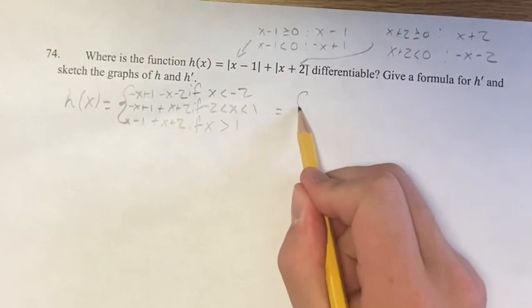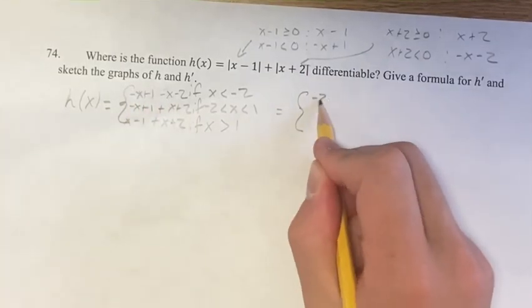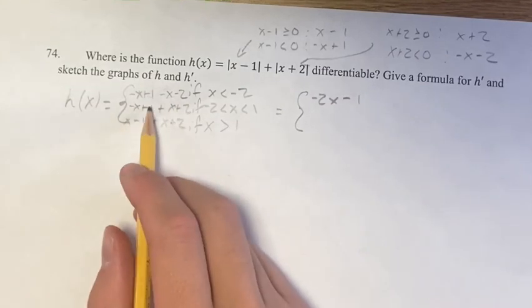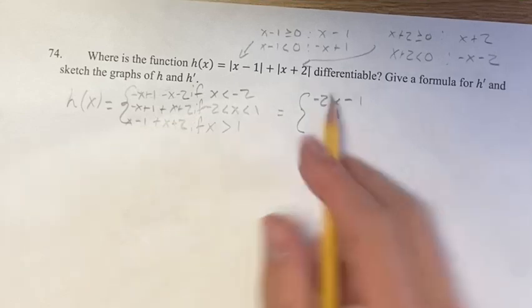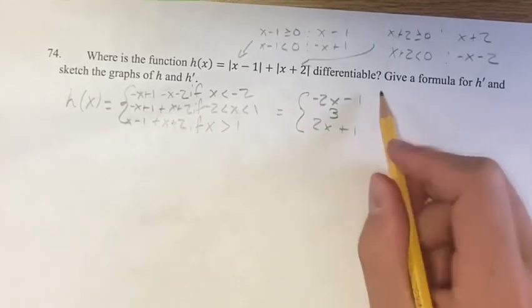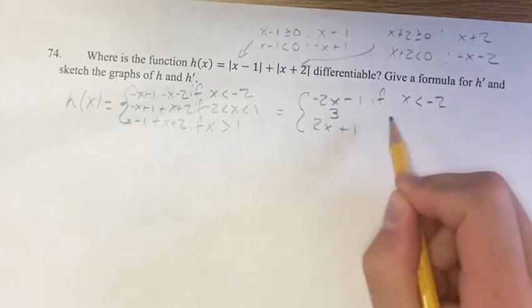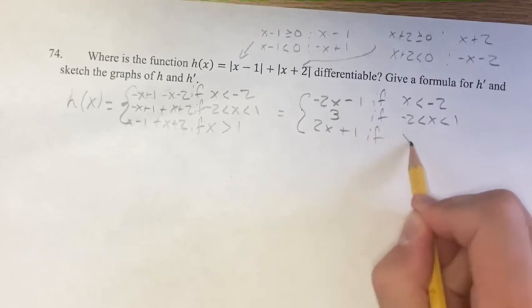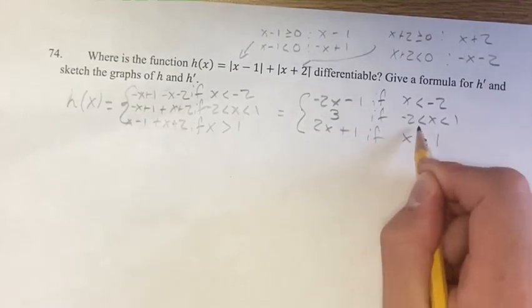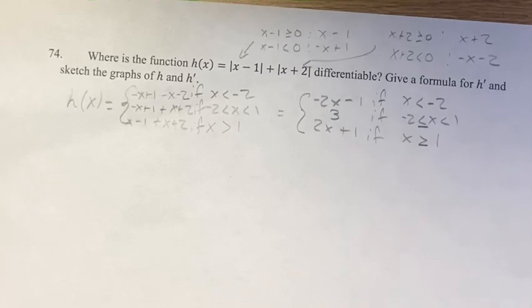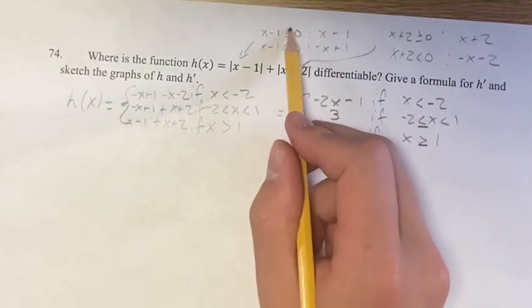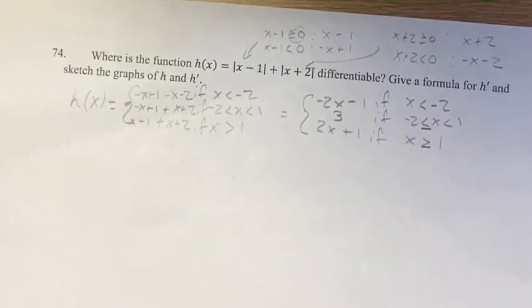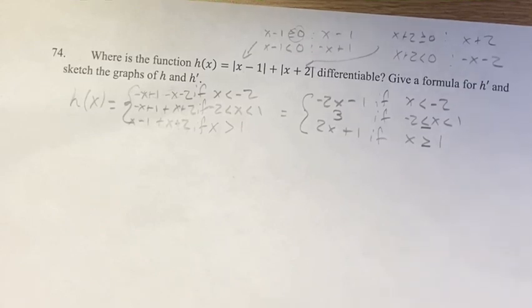Simplifying: when x is less than negative 2, negative x plus 1 minus x minus 2 gives negative 2x minus 1. When negative 2 is less than or equal to x is less than 1, negative x plus x is 0 and 1 plus 2 is 3, so we get just 3. When x is greater than 1, x plus x is 2x and negative 1 plus 2 is plus 1, giving 2x plus 1. We include the equal signs at the boundaries because the function must exist at x equals negative 2 and x equals 1.